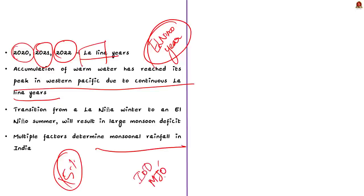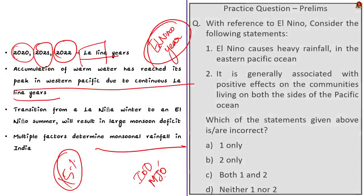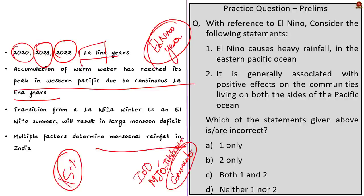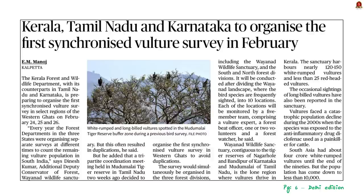The article further says that not only El Niño and La Niña play an important role in determining monsoonal rains in India — the Indian Ocean Dipole and other small regional weather phenomena also play a part in determining the monsoonal rainfall of our country. That concludes this news article discussion. Now let us move on to the next news article.